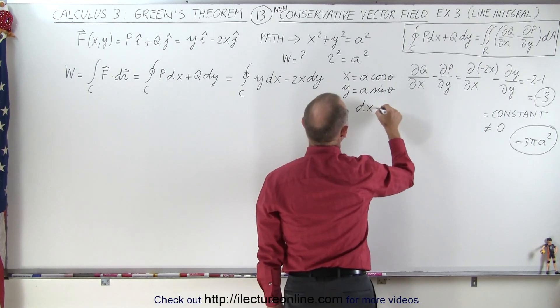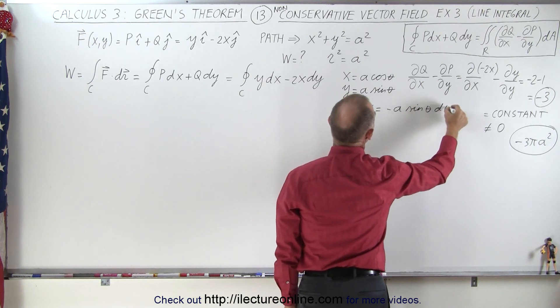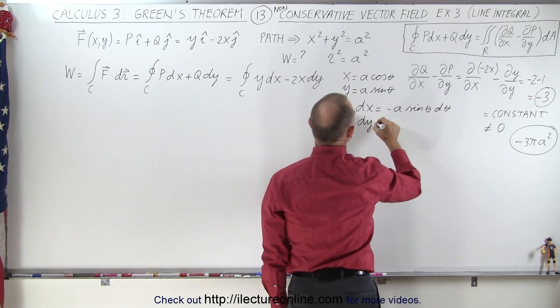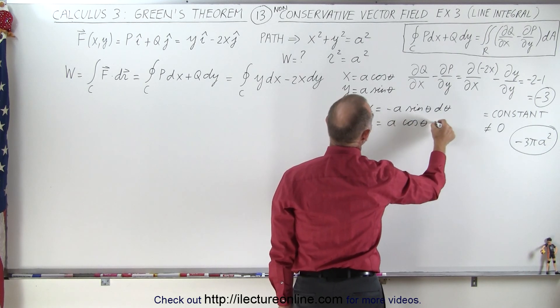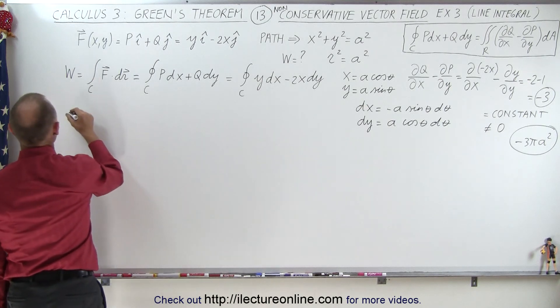So we have dx is equal to minus a times the sine of theta d theta and dy is equal to a times the cosine of theta d theta. So let's go ahead now and plug that in for the work done.